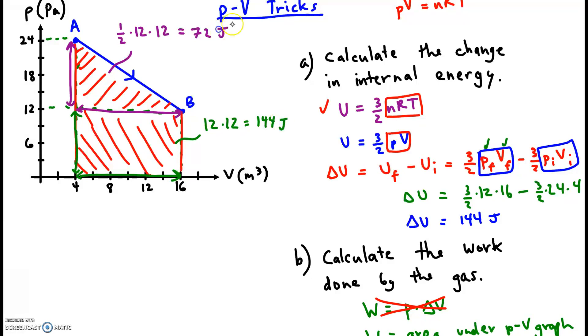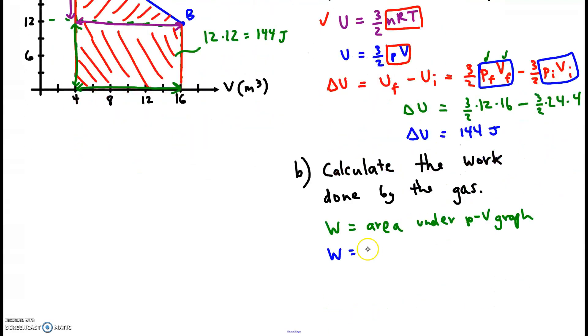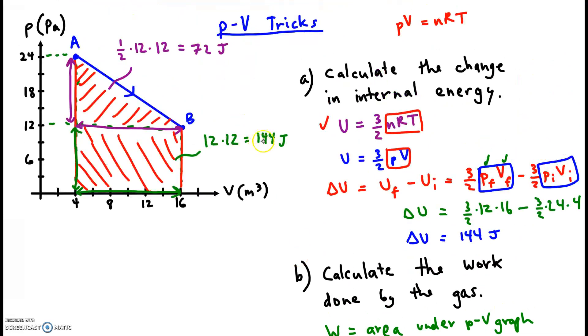I should have put units here. The total area, then, the total work, is going to be... By the way, when you do this type of problem on AB, it's nice to point out that you know what the area under the graph is. It's the work. And you would show your work, the figuring here, the 12 times 12, the 1/2, 12 times 12. And what do we get? 144 plus 72. That's going to be 216.